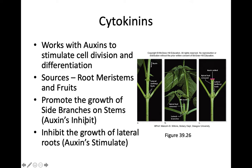Auxins actually inhibit side branches and encourage growth upwards, while they inhibit the growth of lateral roots which cytokinins stimulate — that's how they work in concert with each other. If you apply cytokinins to leaves that have been detached from a plant, it actually slows the progress of those leaves turning yellow, so they can also function in anti-aging in plants. Remember cytokinins are involved in cytokinesis and therefore help stimulate cell division.